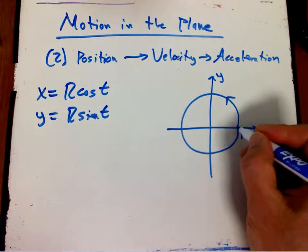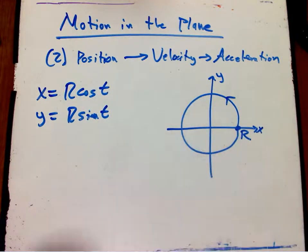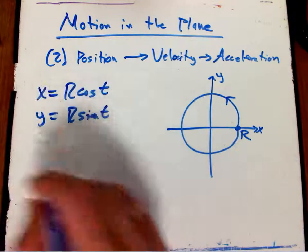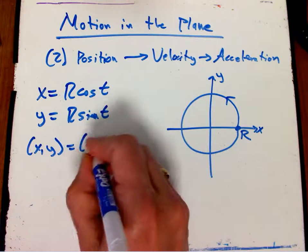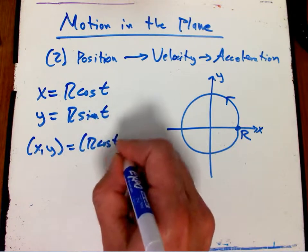Starting at our usual starting point, that's gonna be r comma zero. And so that's the position. If we wanted to say the position as a function of time, we'd just put them together and say this is a point with these two coordinates.